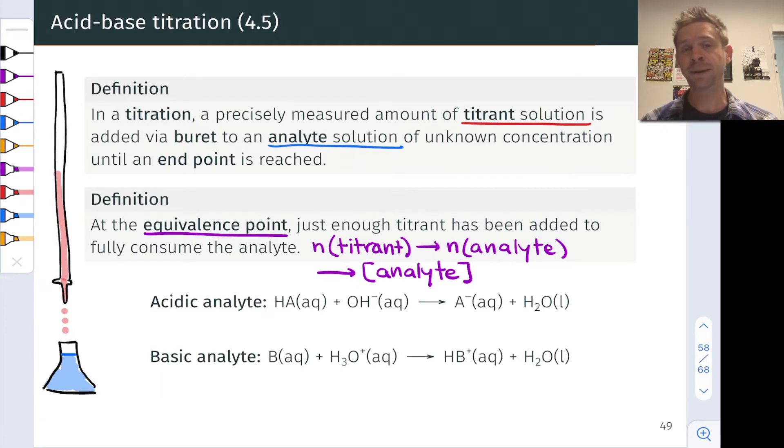In an acid-base titration, the reaction is between an acid and hydroxide or a base and hydronium. So the titrant in red is a strong base or acid, a source of hydroxide or hydronium in known amount. The analyte may be a strong or weak acid or base.